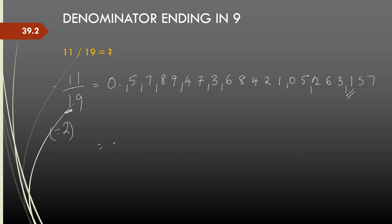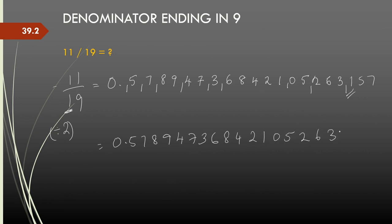So if I have to write the answer it will be 0.578947368421052631 and then the whole thing will repeat — 578947368421052631 will repeat again. So this is how you can very easily write answers of fractions where the denominator ends in 9.